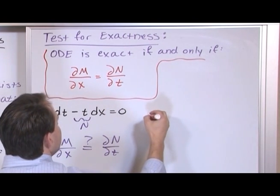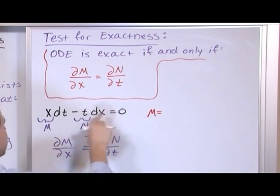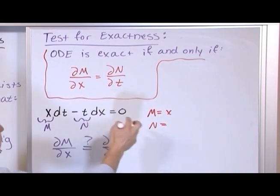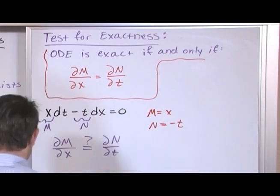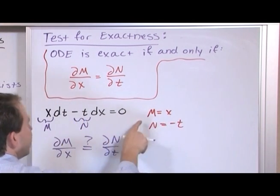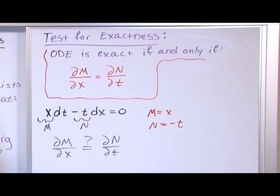And just to be absolutely clear about it, I'll write it right over here. m, the function m is equal to x and the function n is equal to negative t. In fact I always recommend you writing m and n like this because it will really help you focus on what you're trying to do.